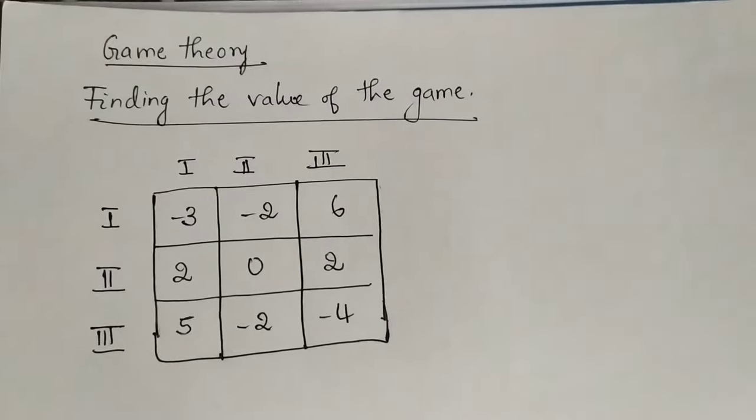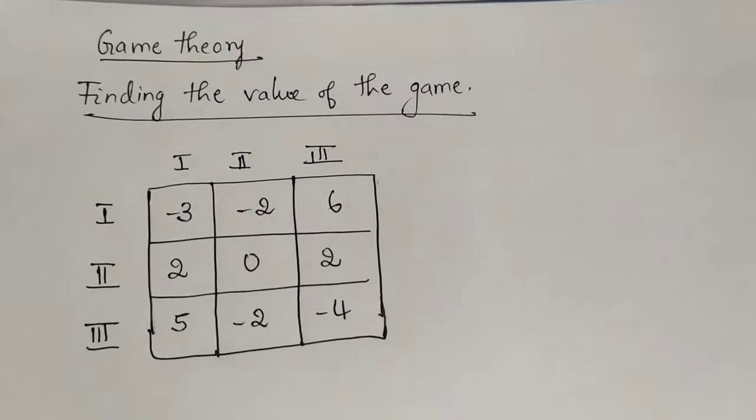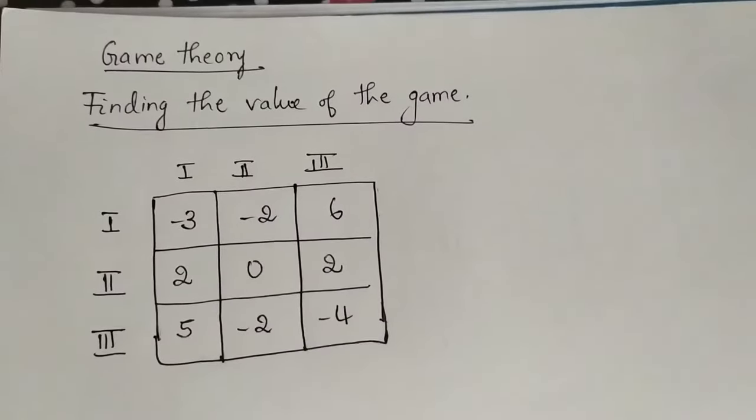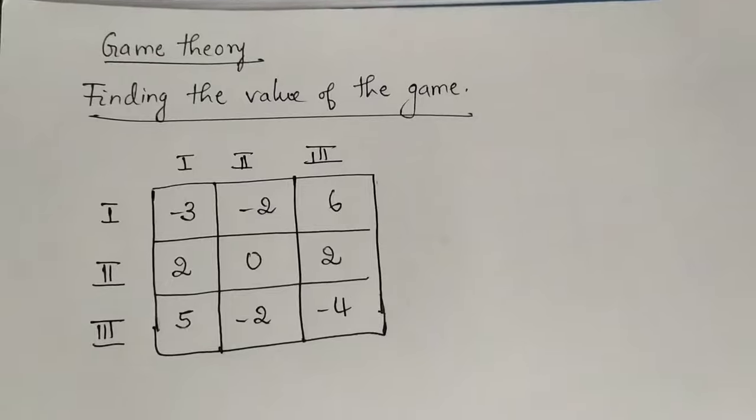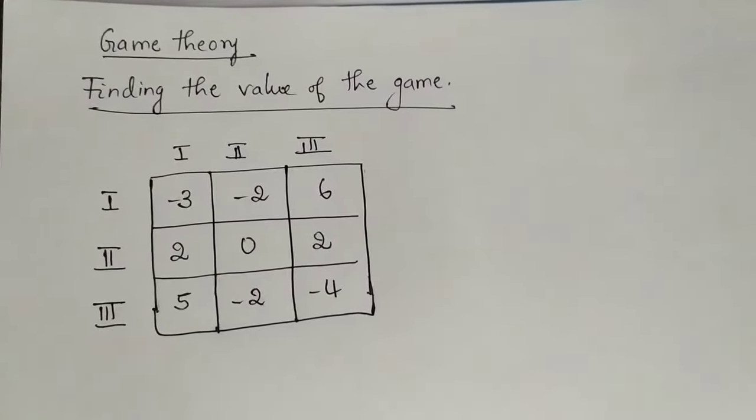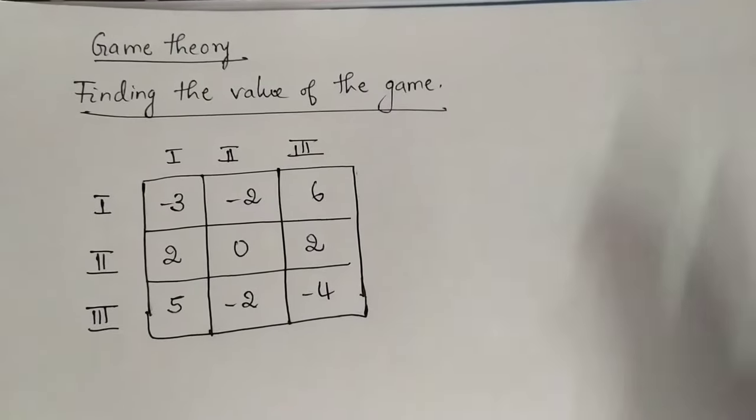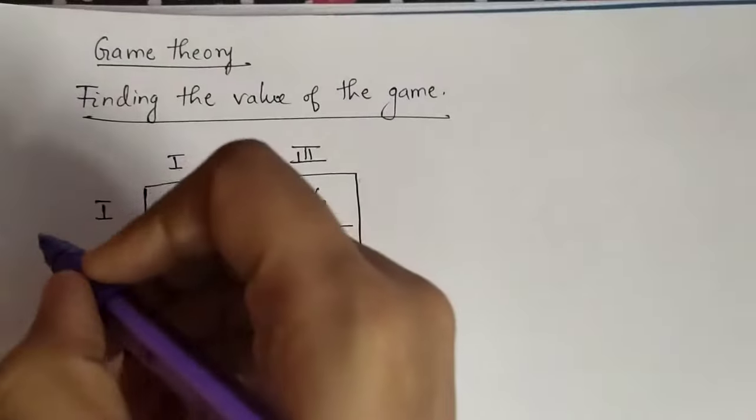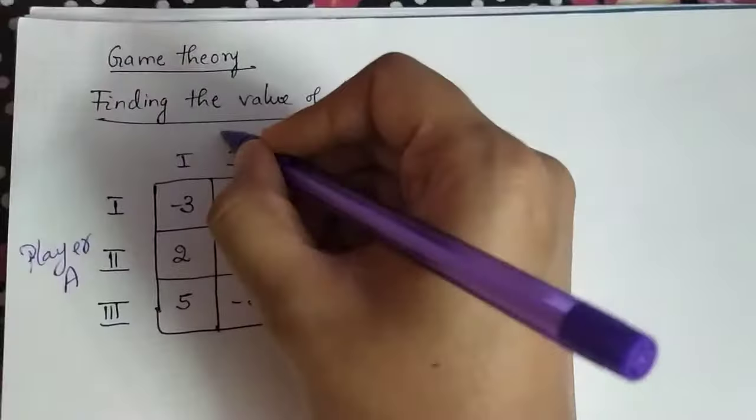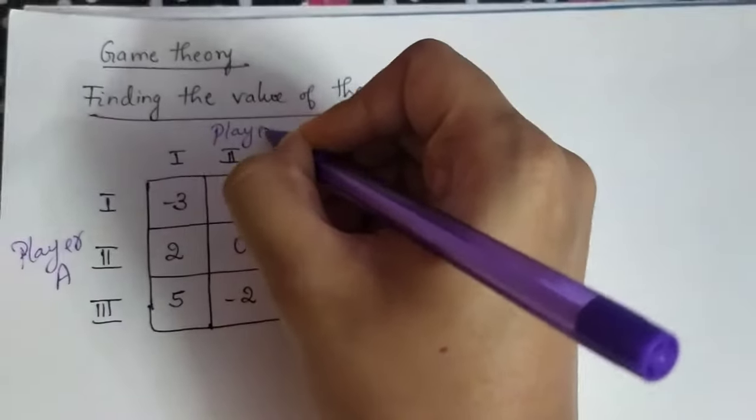Hi friends, welcome you all to Fun Learning Engineering. Here we will be talking about a concept in game theory in operations research: finding the value of the game. You would be given a matrix like this and you would be asked to find the value of the game and also the strategies that are applied by the players. Let us consider this side as Player A and here as Player B.